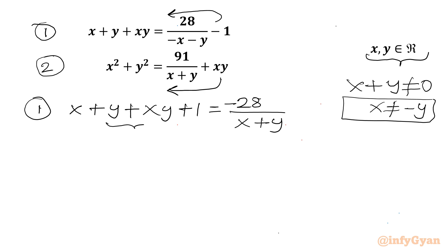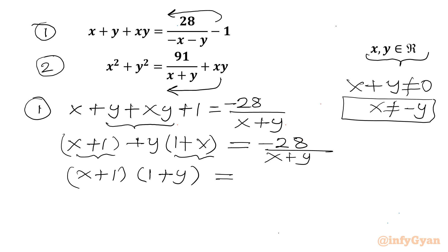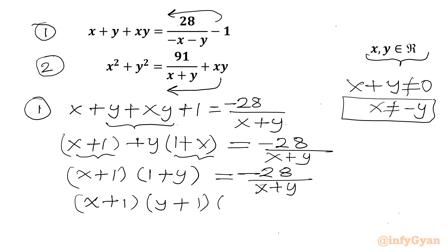If I take y common from the first and last terms on the LHS, I get y times (1 plus x). The right-hand side is negative 28 over x plus y. Now you can see (1 plus x) is common, so I can factor it out, giving (1 plus x)(1 plus y). This leads us to: (x plus 1)(y plus 1)(x plus y) equal to negative 28. This is equation number 1.